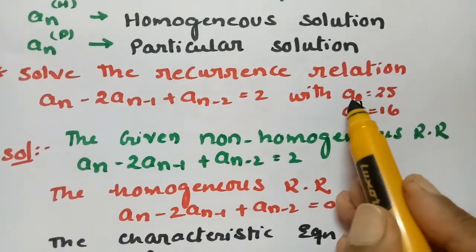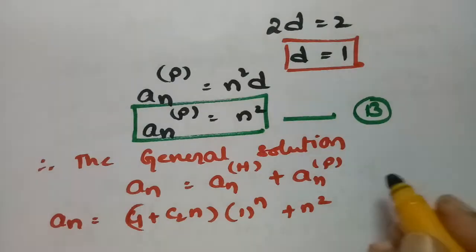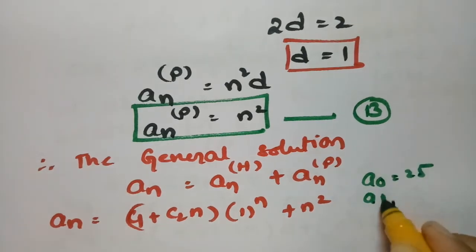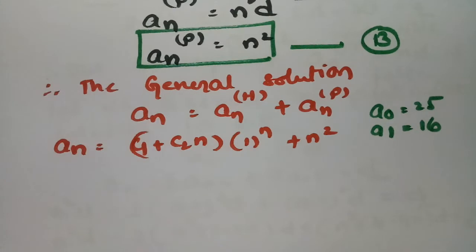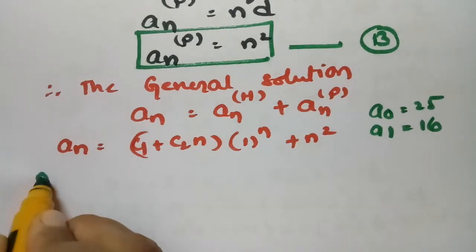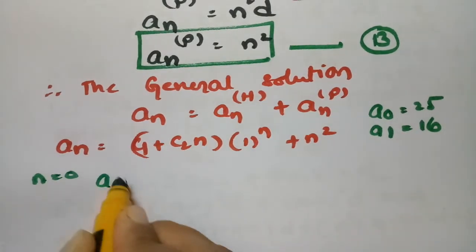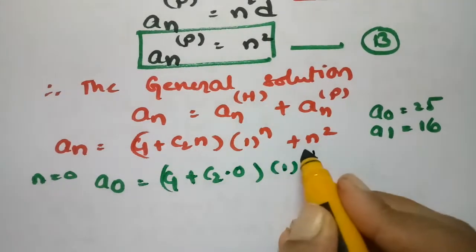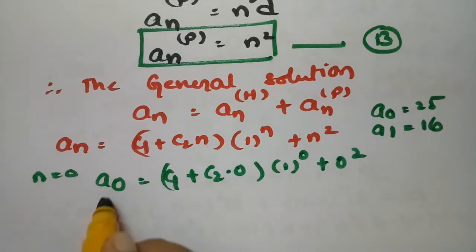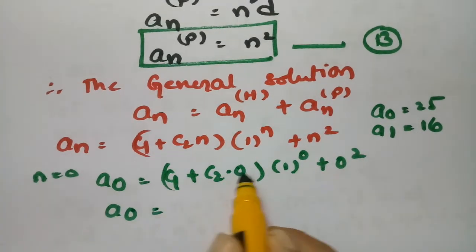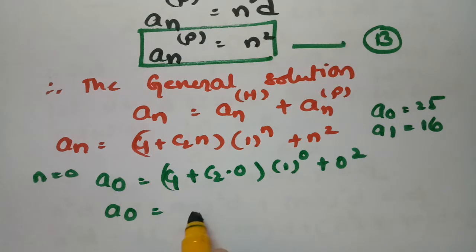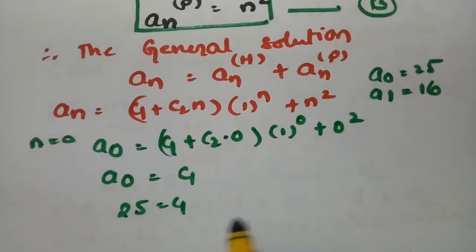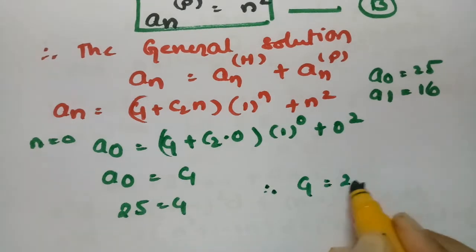The initial values are A0 = 25 and A1 = 16. Substituting n = 0 into the general solution: A0 = C1 + C2·(0) + 0² = C1. Since A0 = 25, we get C1 = 25.